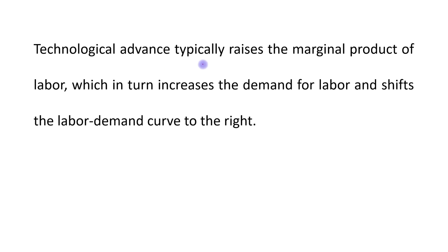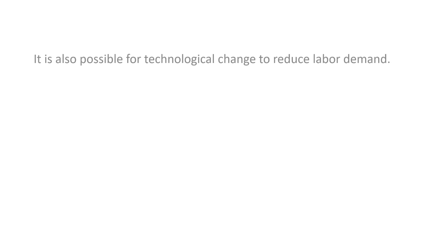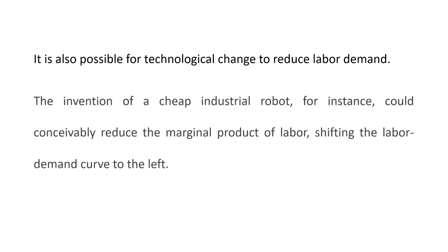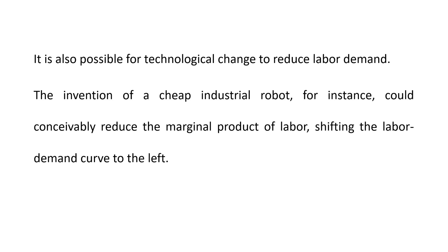Technological advancement typically raises the marginal product of labor, which in turn increases the demand for labor and shifts the labor demand curve to the right — that is Case 1. It is also possible for technological change to reduce the demand for labor. For example, the invention of a cheap industrial robot could reduce the marginal product of labor, shifting the labor demand curve to the left. There can be two cases.